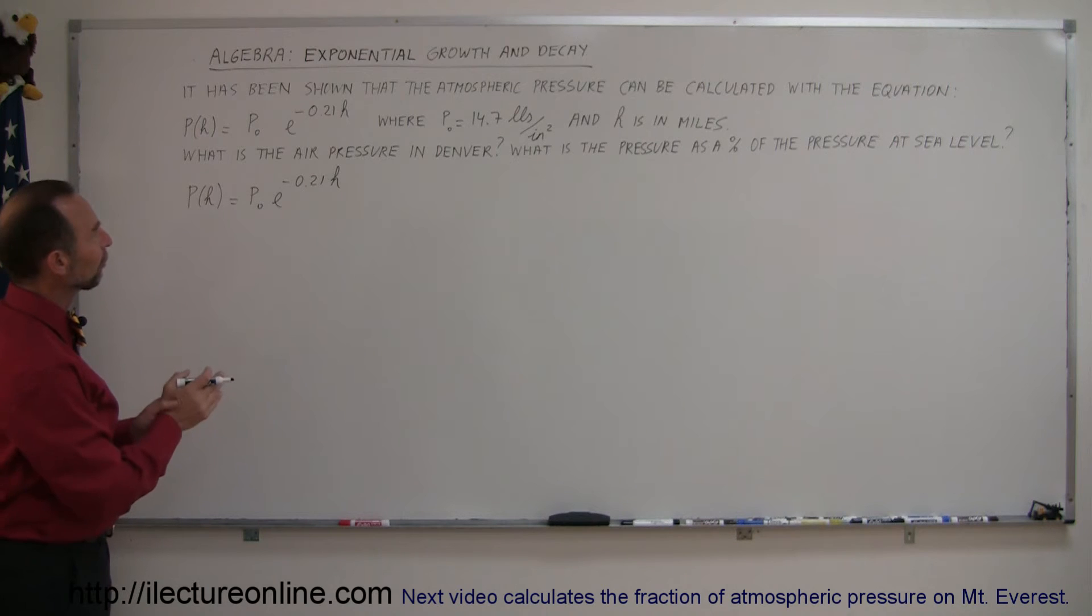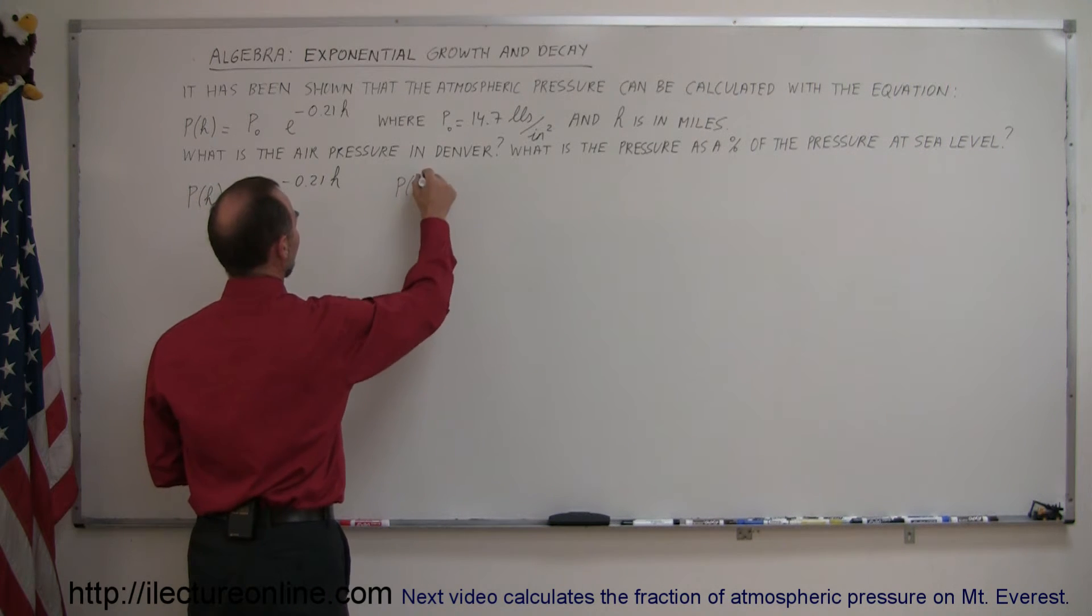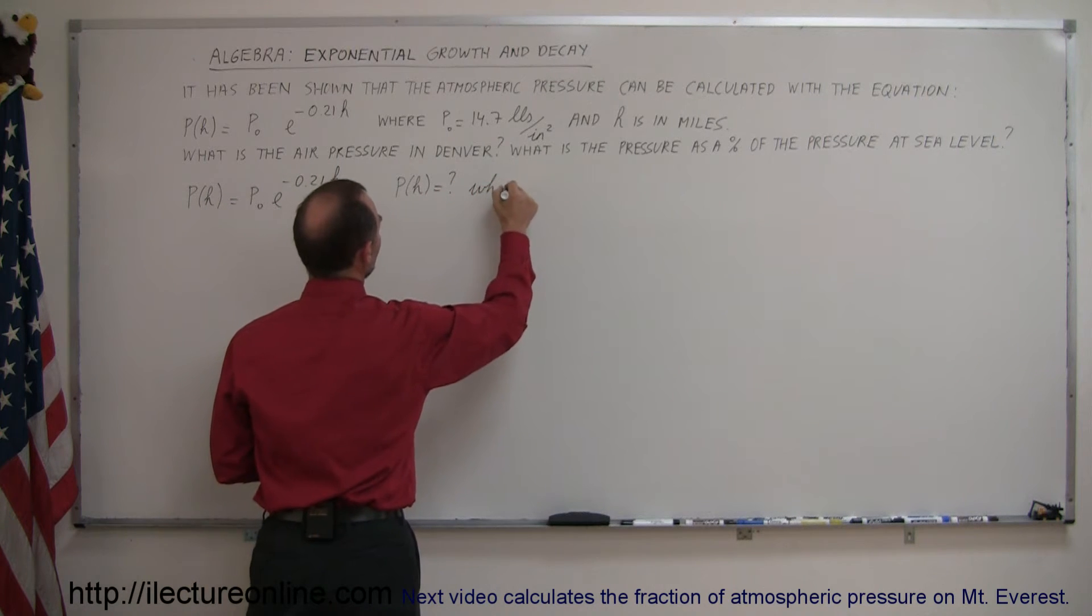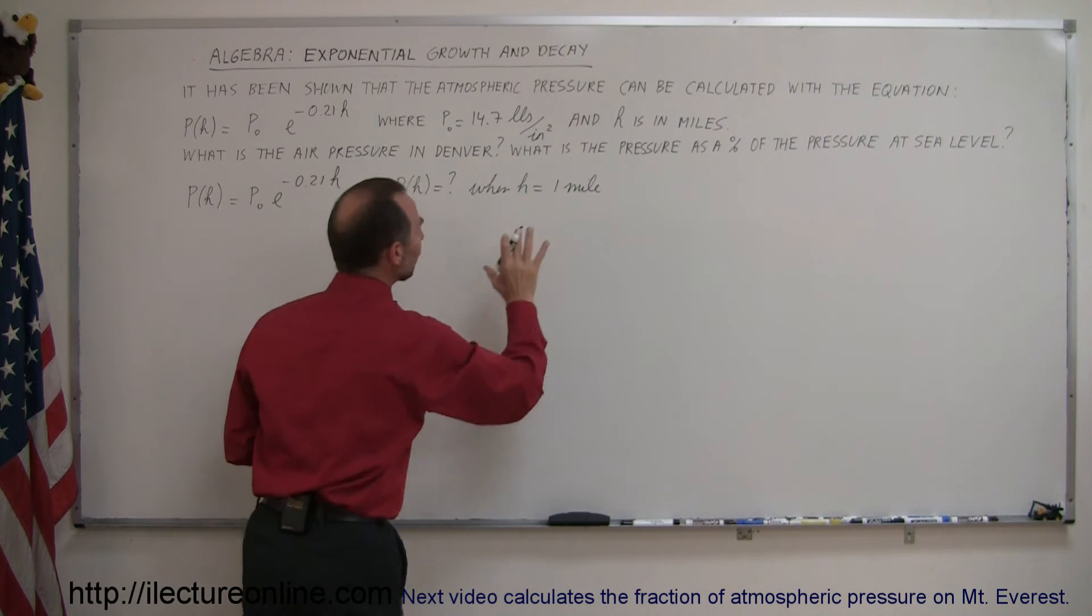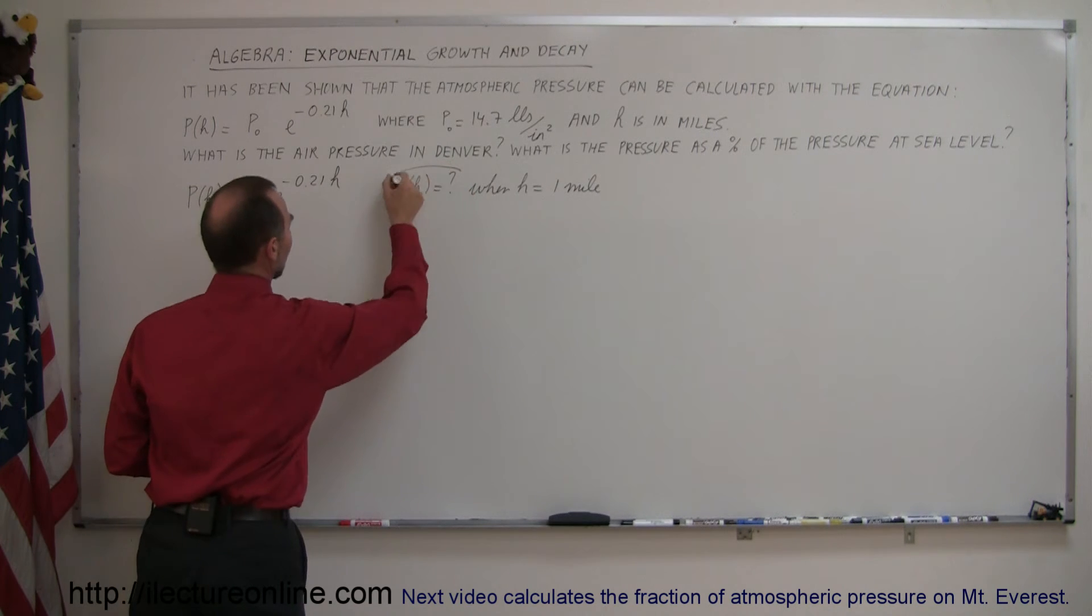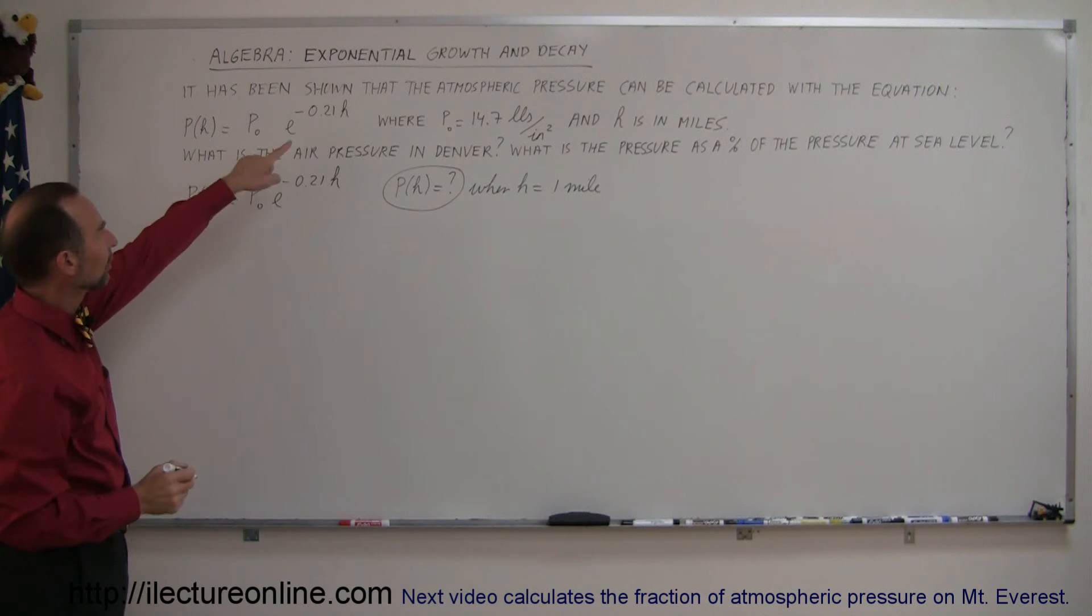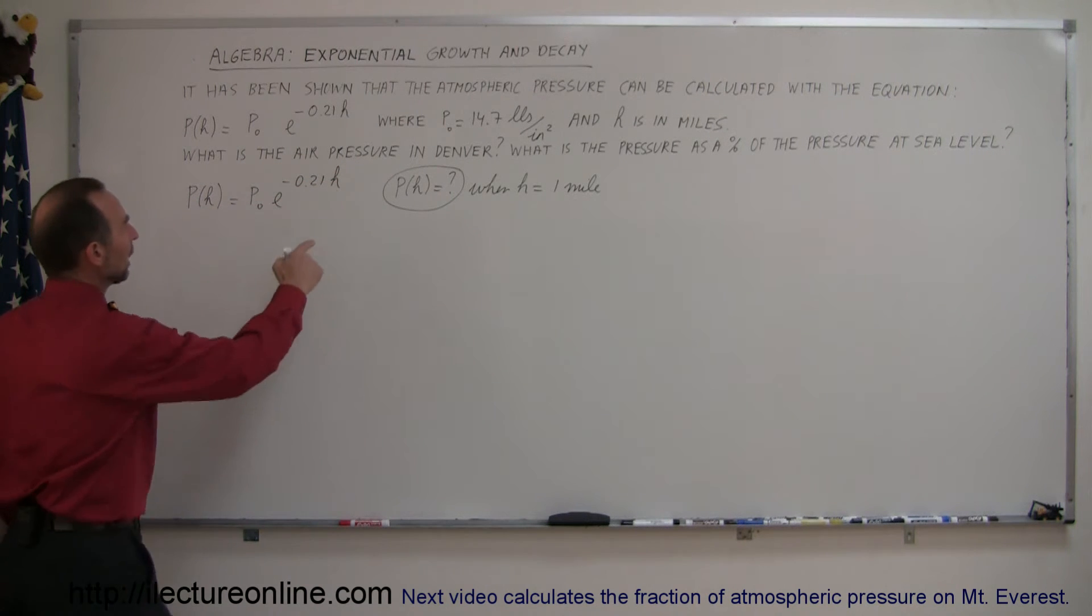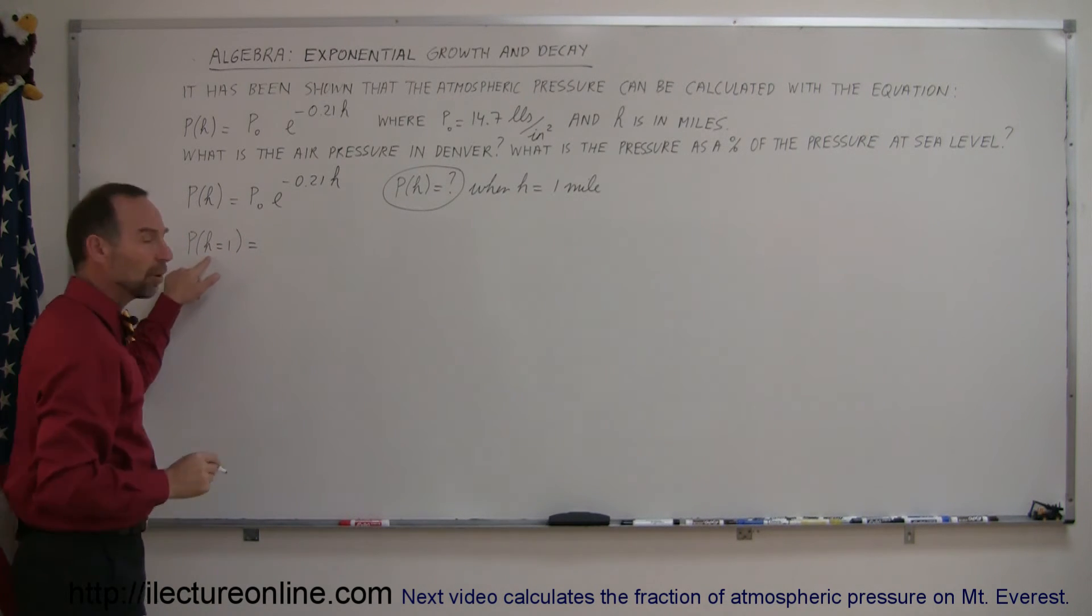So what are we looking for here? They want to know the pressure. So pressure as a function of h equals question mark when h equals one mile. It's very important that you figure out what we're asking for, what is given. So we're definitely asking for this, and we leave the equation as is. We plug in the p sub not, it's 14.7, and we plug in one for h. So p when h equals one is equal to...